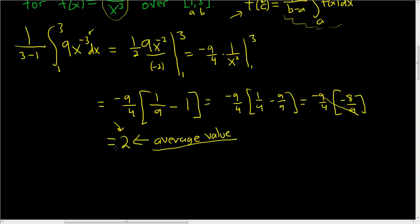And so f of x in this problem was 9 over x cubed. So f of C, we want that to be equal to 2. So that means that we want 9 over C cubed equal to 2. And to solve this equation, maybe just multiply by C cubed. So 9 is equal to 2C cubed.